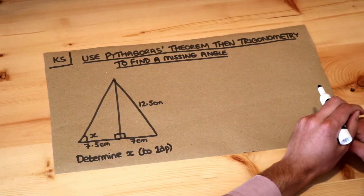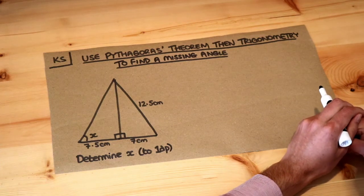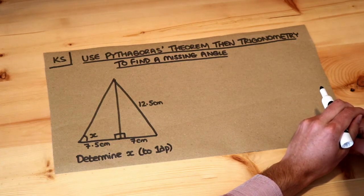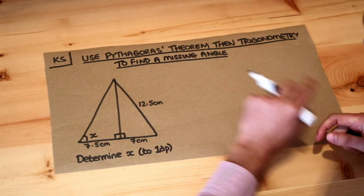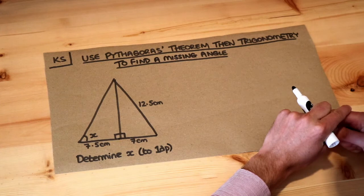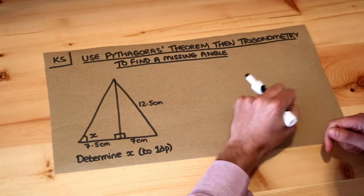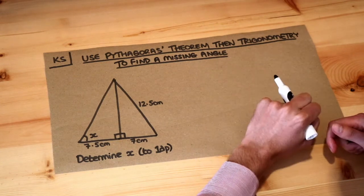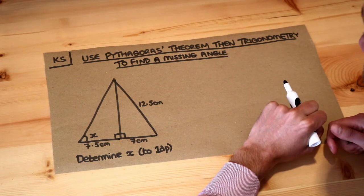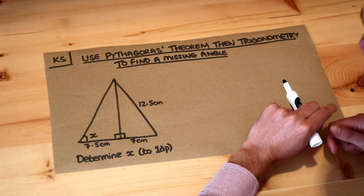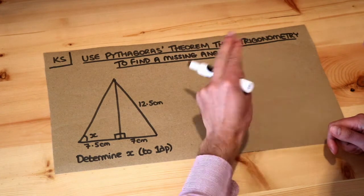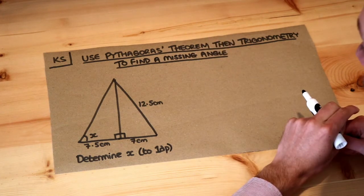Hello and welcome to this Dr. Ross-Math's key skill video on using Pythagoras theorem then trigonometry to find a missing angle. You should already have explored Pythagoras theorem and trigonometry for right angle triangles to find a missing angle, so I'm going to assume you already know how to do that. If you don't, I do have videos on those.